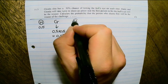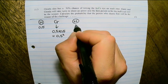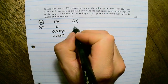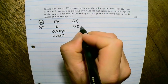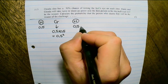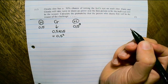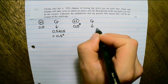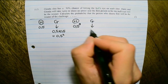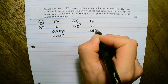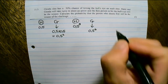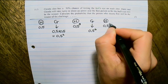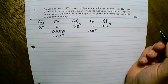Then Harry shoots his second shot — third overall in the competition — so it will be 0.5 to the power of 3. Then Glenda shoots and her probability builds on Harry's previous one, giving 0.5 to the power of 4. Then Harry shoots again at 0.5 to the power of 5, and so the pattern continues.